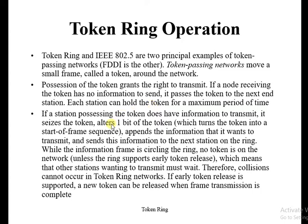If the station possesses the token and does have information to transmit, it seizes the token, alters one bit of the token — which turns the token into a start-of-frame sequence — and appends the information it wants to transmit, then sends it to the next station on the ring.